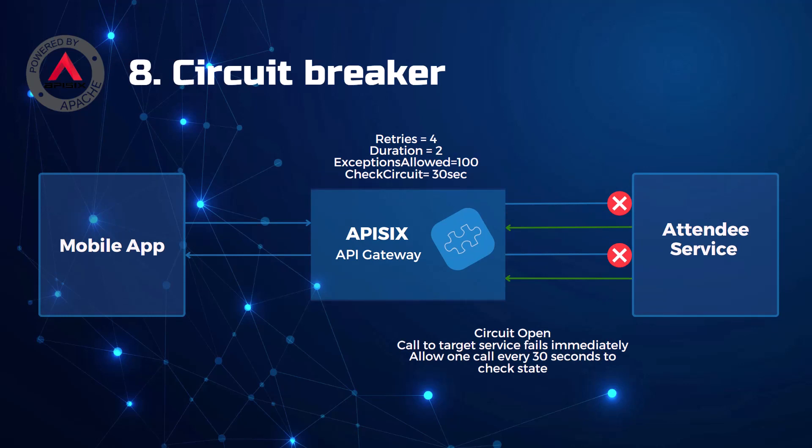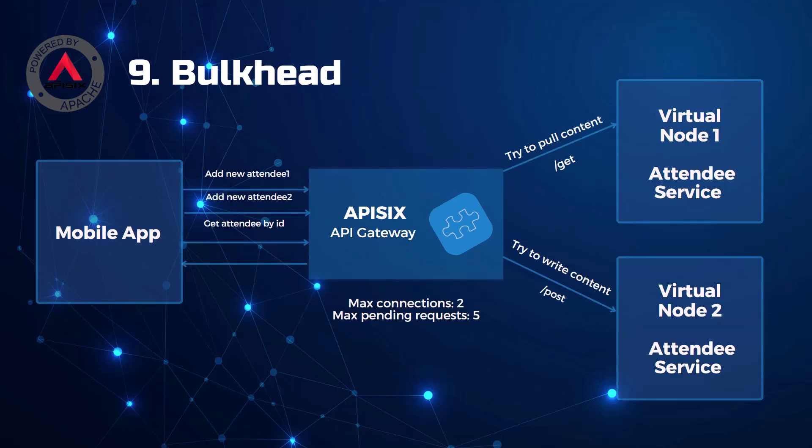Number eight: sometimes even retry is not enough, so you can also use circuit breaking. Apache APISIX, for example, offers a special API Breaker plugin that implements circuit breaker functionality to handle failures and prevent upstream services from constant retry attempts. If the service fails or performs slowly, it monitors the number of recent failures and uses this information to decide whether to allow the operation to proceed or simply return an exception immediately — a fail-fast approach. From a usage standpoint, it's very easy to enable this plugin with no code changes, and it can be combined with other plugins as well.